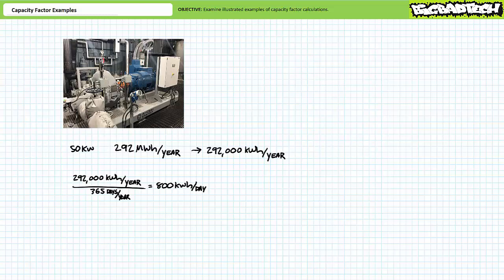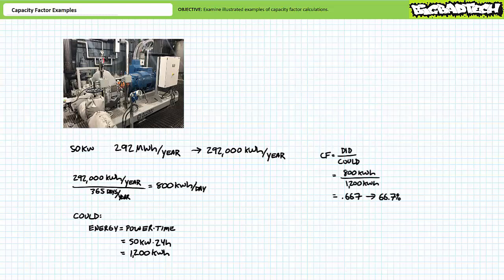Theoretically this generator could produce more because it could work at full capacity for 24 hours a day. Energy is power times time — 50 kilowatts times 24 hours demonstrates this generator could theoretically produce 1,200 kilowatt hours of energy. Capacity factor is did over could: 800 kilowatt hours over 1,200 kilowatt hours gives a capacity factor of 66.7%, meaning on average this generator runs at full capacity for two thirds, or 16 hours, of every day.